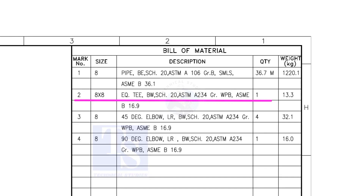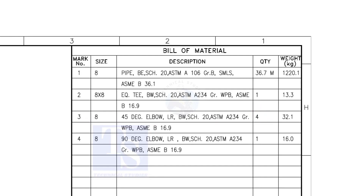What is WPB? W means weldable, P means pressure, B is grade B, and refers to the minimum yield strength. Item number 3 is a 45-degree long radius elbow — note that there are 4 numbers of 45-degree elbows. Item number 4 is a 90-degree long radius elbow, and the quantity is 1.